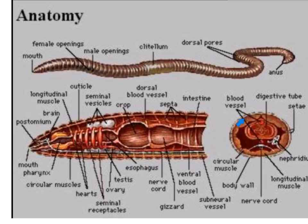Here we can see a cross-section with the digestive tube. Again, the infolds that allow for increased surface area within the intestines are known as the typhlosole. We can also see the nephridium here, with the nephridiopore located nearby.